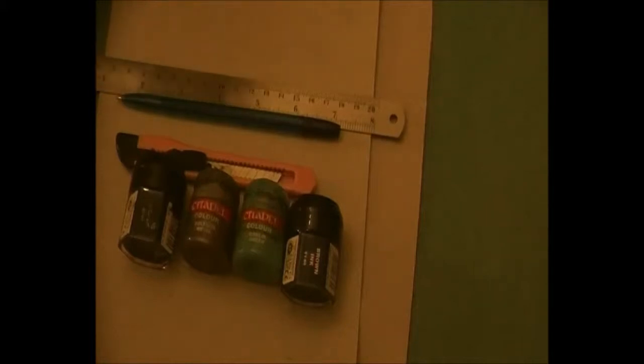Hi everyone, this is part two of building your own Aegis defence line. For the second part, which is a larger barricade, you're going to need the same thick cardboard again, some thinner cardboard, knife, ruler, pen, same colors as before which was black, bolt metal, goblin green, and also brown ink wash.